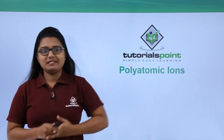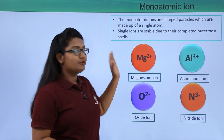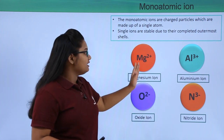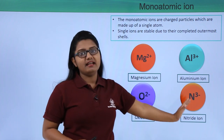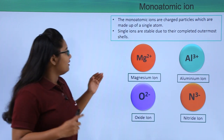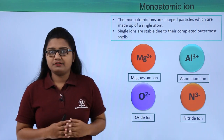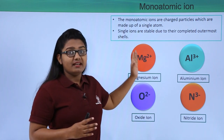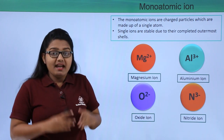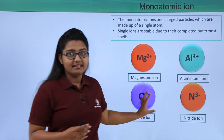Hello everyone, welcome to Tutorials Point. In this video we will be discussing polyatomic ions. There are ions made up of only single atoms, like a magnesium ion, an aluminium ion, an oxide ion, and a nitride ion — each made up of only one atom of a particular element. When an atom loses electrons it becomes positively charged, called a cation, and when it gains electrons it becomes negatively charged, called an anion.